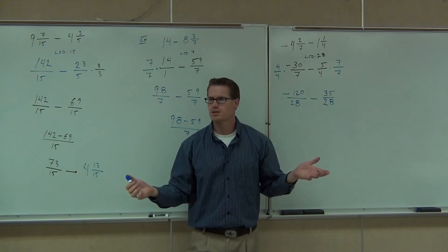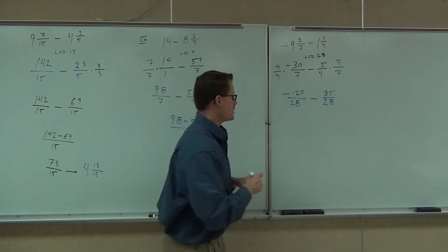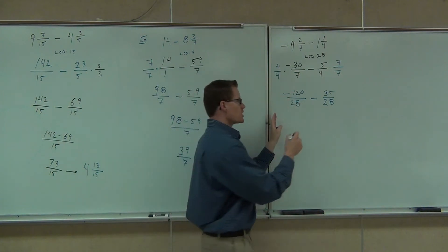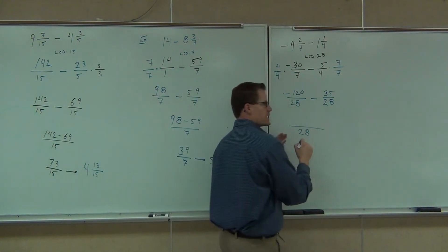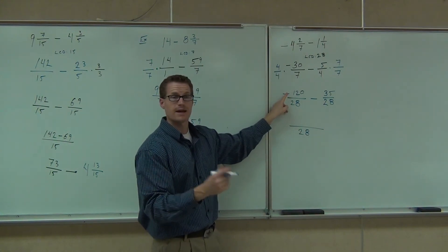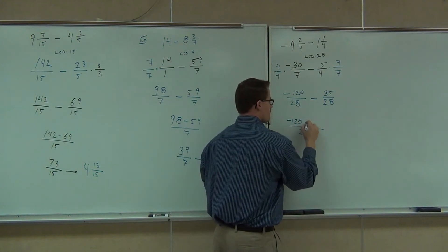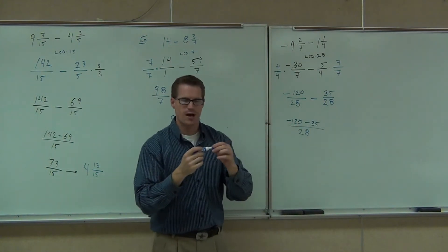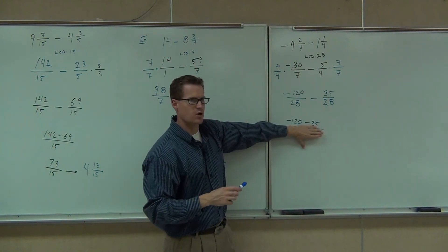We have the common denominator. The next thing we're going to do is change it to one fraction. Here's why we put the negative on the numerator — so that when we change to one fraction, we have a denominator of 28 and the negative goes to 120. So we can put those numbers together: negative 120 minus 35. We've just changed a fraction problem into simply a subtraction problem.